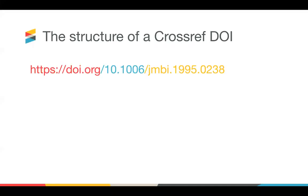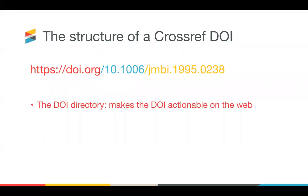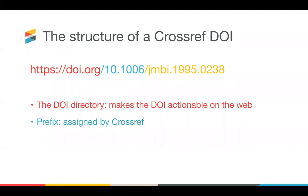A DOI is comprised of three sections. The red part is the resolver address. Each DOI is an identifier, but it is also an actionable link, which means that it's resolvable in a browser — when you click on it, it will take you to the page. The blue part is the prefix, and this is what is assigned to each member when they join Crossref, usually in the format of 10 dot and then five numbers afterwards. In some journals, you may see DOIs with prefixes that only have four digits, but they've had five digits since 2012.